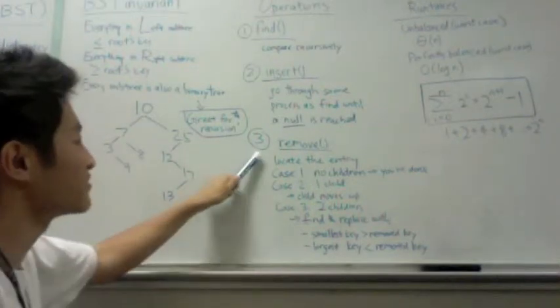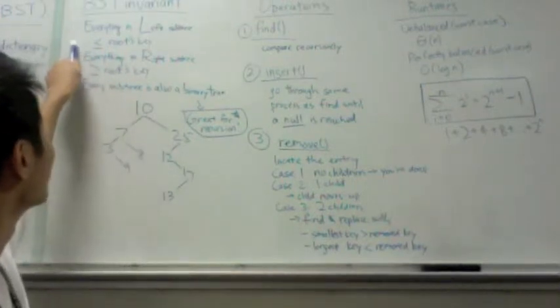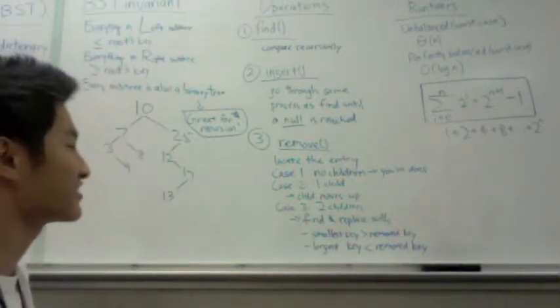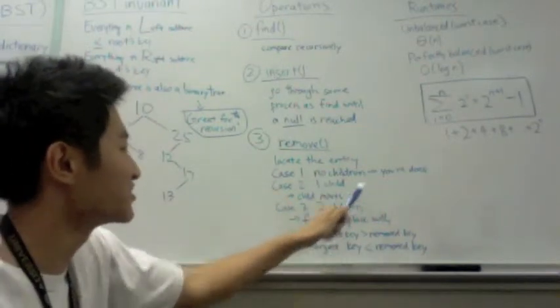Finally, remove is the most complicated operation. And for good reason, because you want to maintain this invariant after you're done. So first what you have to do is locate your entry. Then, if you have no children,